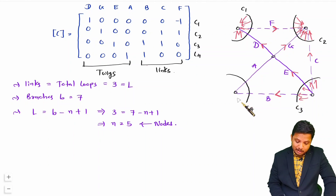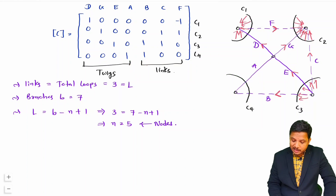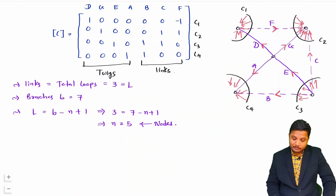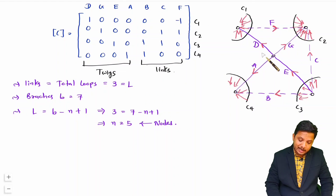Now we have cut set c4. C4 is having a and b and both are 1. B is there in this direction, so c4 will be in the inward direction of this cut set. So a should also be in the inward direction. As per the cut set, I have now obtained the direction of the entire directed graph.